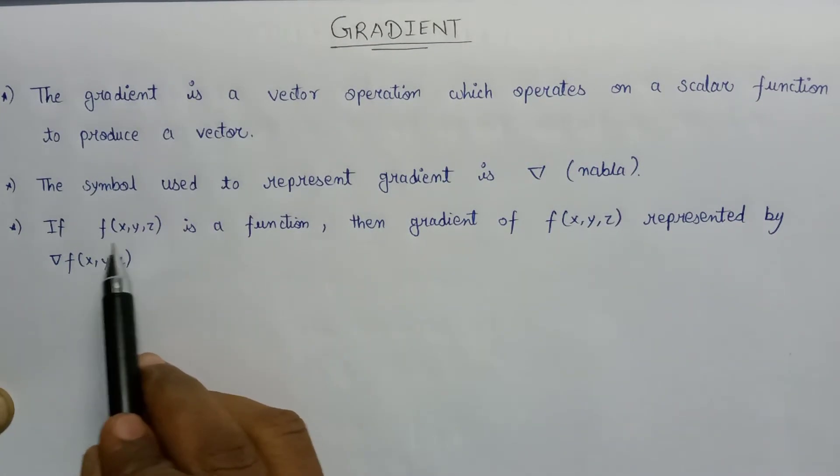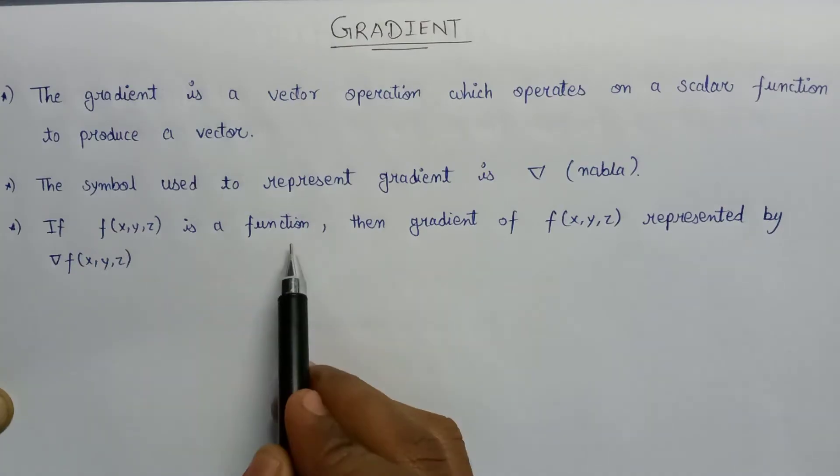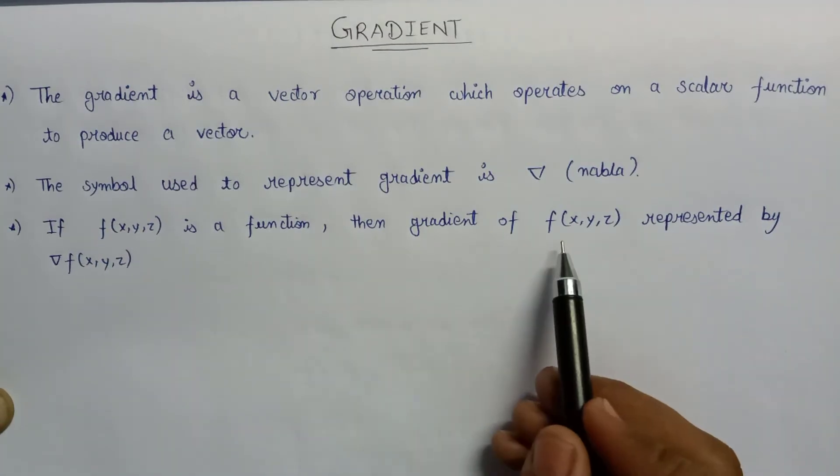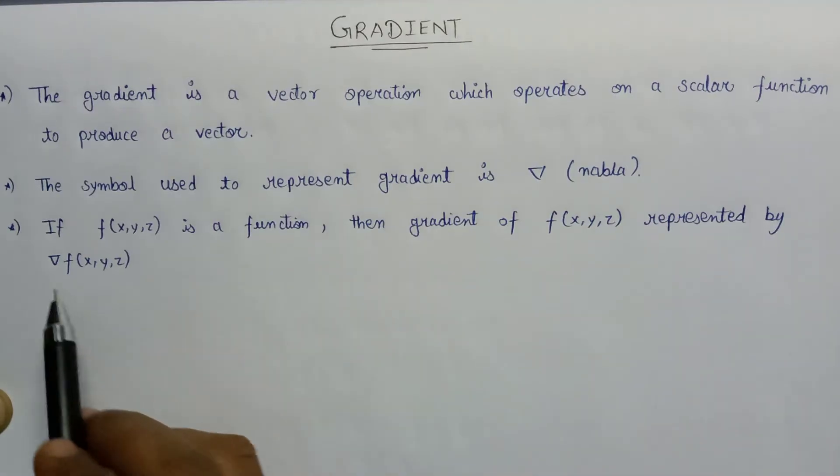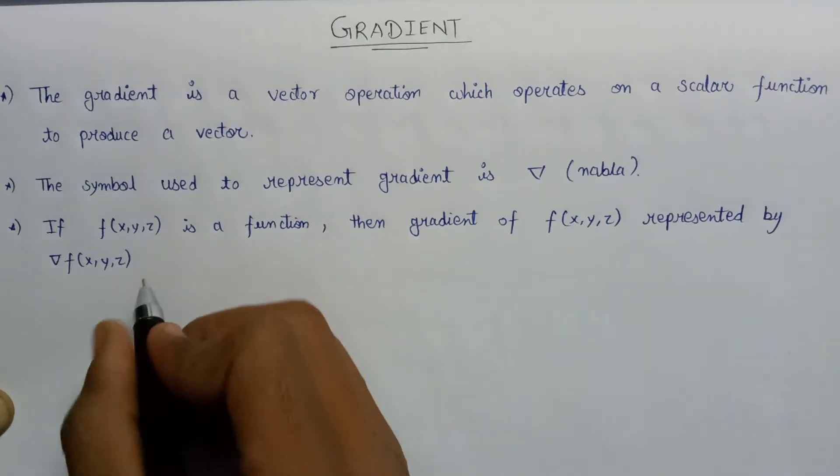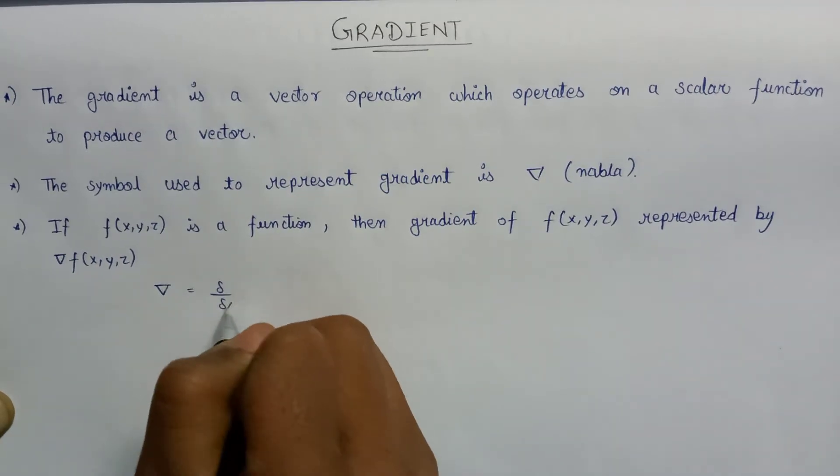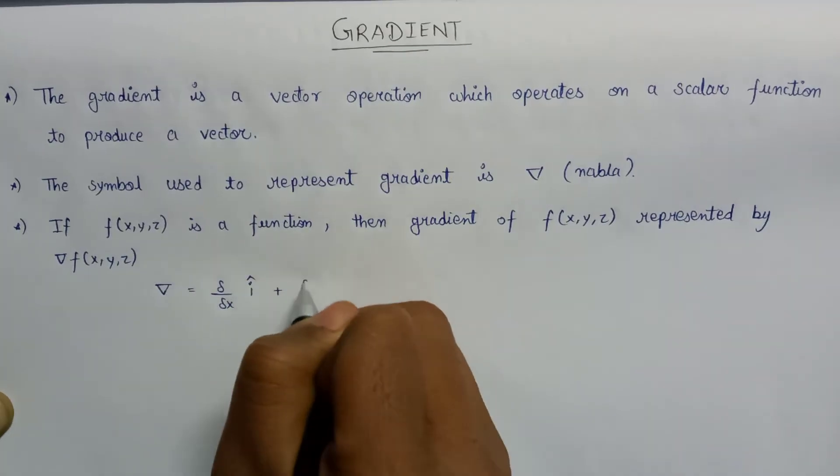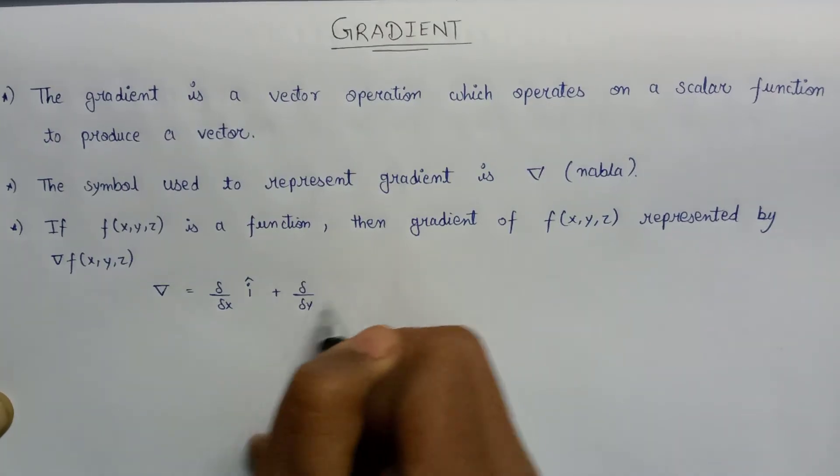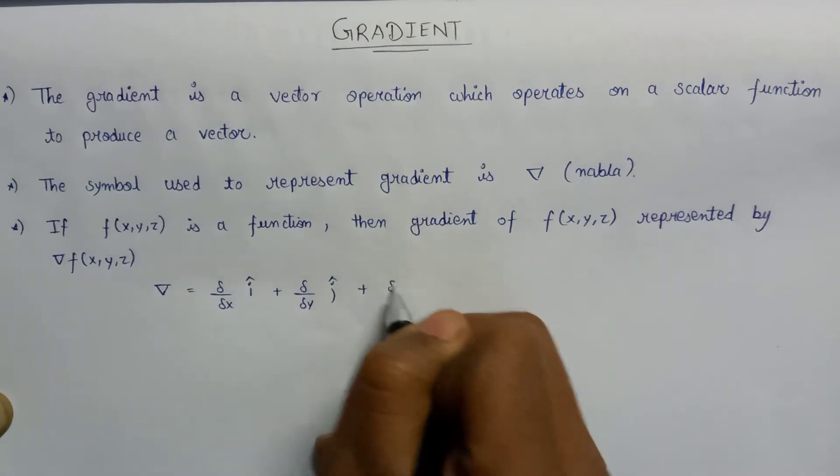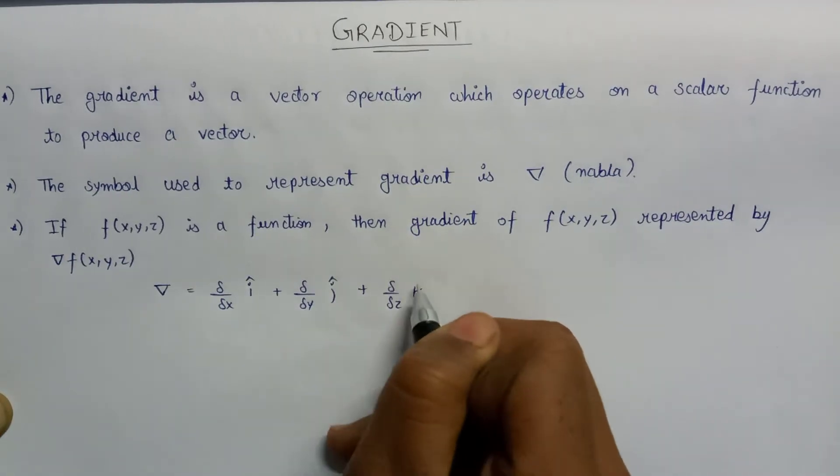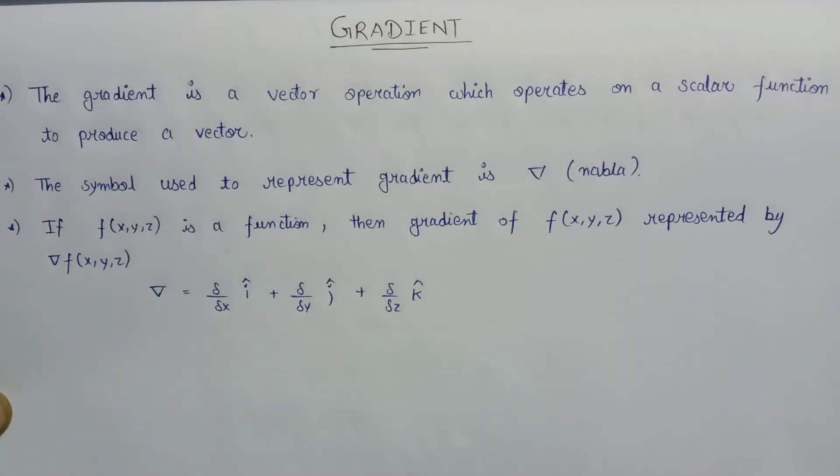If f(x,y,z) is any function and we want to calculate its gradient, then the representation of the gradient of a function f(x,y,z) can be written like this. Here, this nabla is equal to del over del x i cap plus del over del y j cap plus del over del z k cap. This is the value of nabla, or we can say it as del.